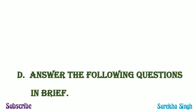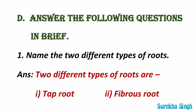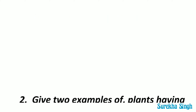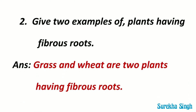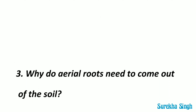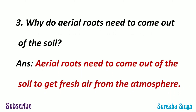Question D. Answer the following questions in brief. 1. Name the two different types of roots. The two different types of roots are tap root and fibrous root. 2. Give two examples of plants having fibrous roots. Grass and wheat are two plants having fibrous roots. 3. Why do aerial roots need to come out of the soil? Aerial roots need to come out of the soil to get fresh air from the atmosphere.